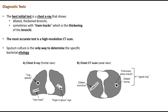The best initial diagnostic test is a chest X-ray, which will show dilated thickened bronchi — sometimes with tram tracks, which is the thickening of the bronchi. The most accurate test is a high-resolution CT scan of the chest. Sputum culture is the only way to determine the specific bacterial etiology.